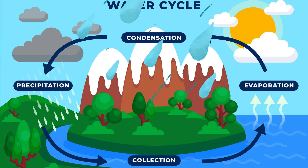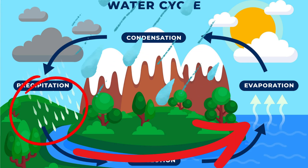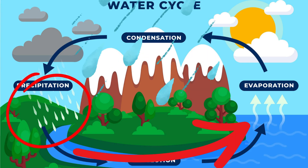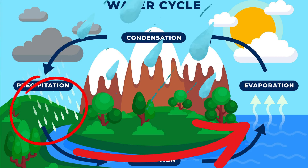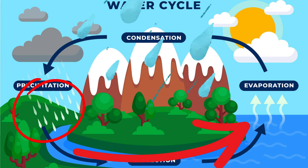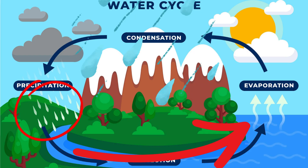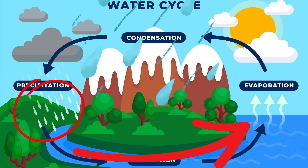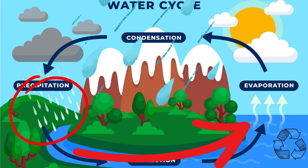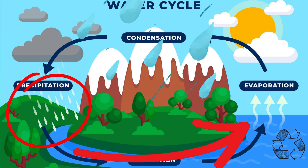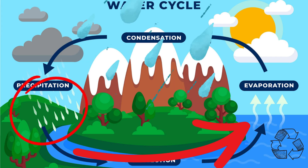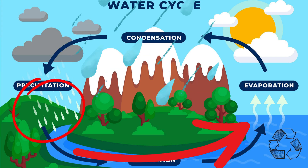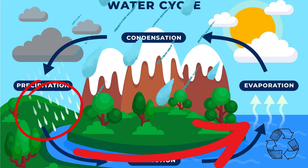After the rain falls, water flows through rivers and streams back into the ocean, completing the water cycle. And then the sun starts the whole process all over again — it's like a recycling system.